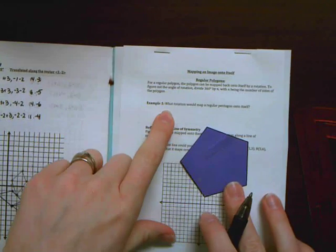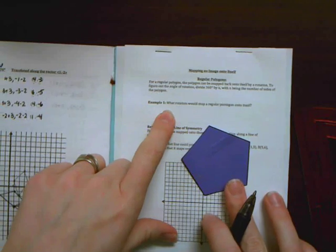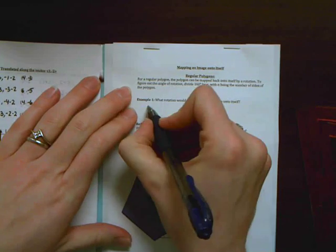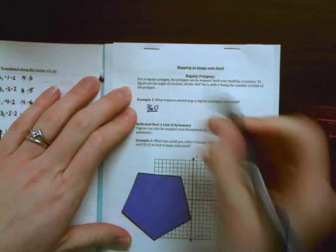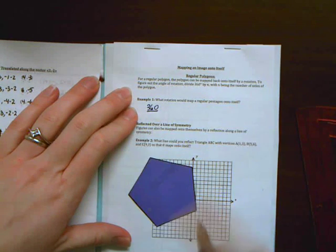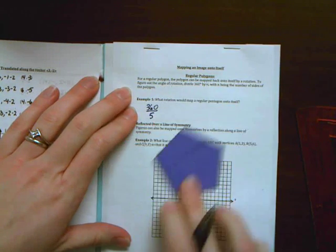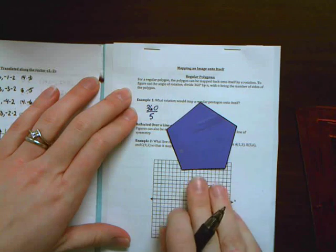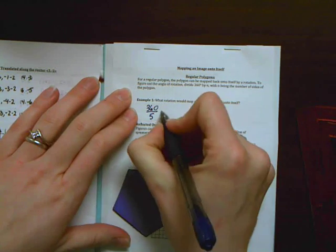So for this first example it wants to know what rotation would map a regular pentagon onto itself. Well, we would say 360, because there are 360 degrees in a circle, divided by five because we have five sides that are all the same on this pentagon.